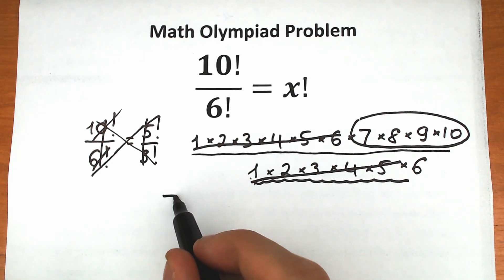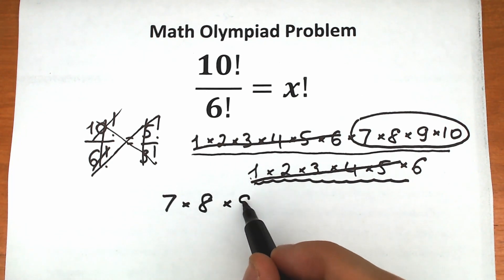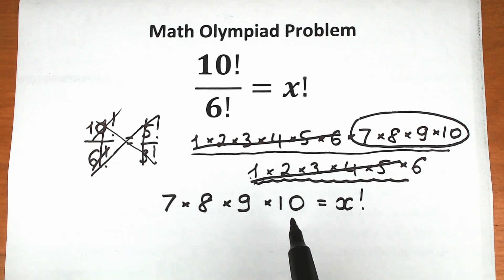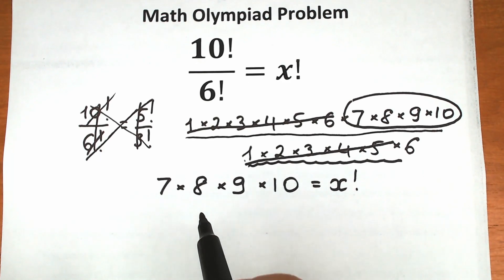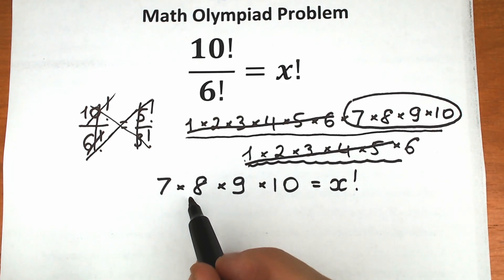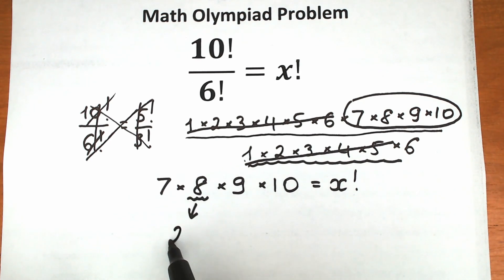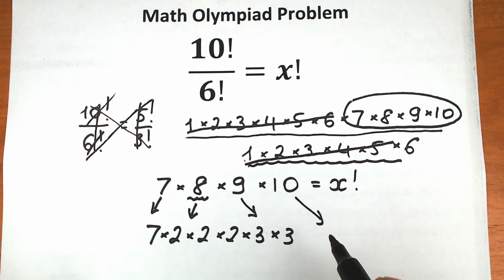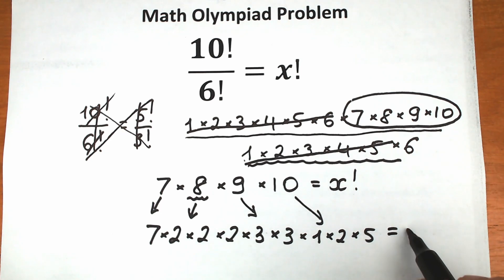So what we have is 7 times 8 times 9 times 10, which equals x factorial. Now let's rewrite these values: 7 stays as 7; 8 can be written as 2 times 2 times 2; 9 can be written as 3 times 3; and 10 can be written as 1 times 2 times 5. This product equals x factorial.